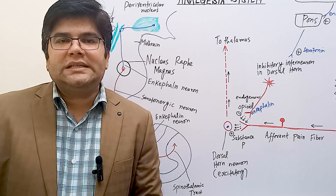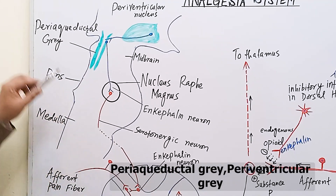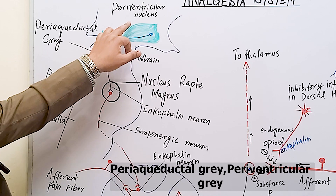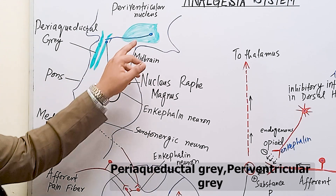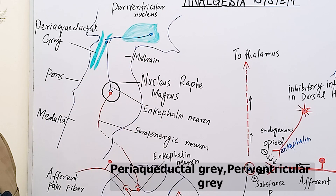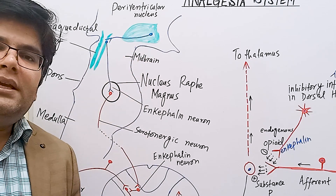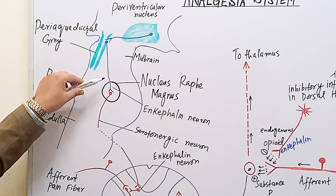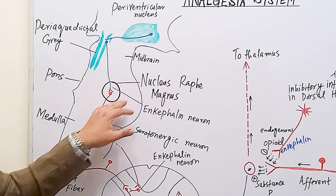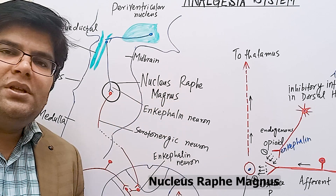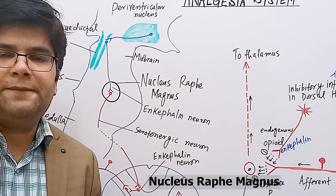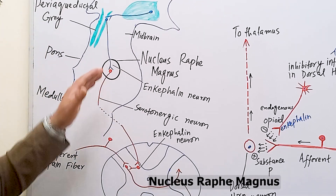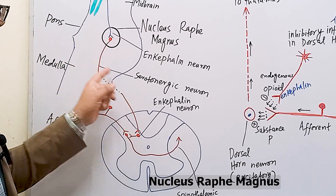There are three important components of the pain analgesia system. First is the periaqueductal gray matter, present around the aqueduct of Silvius, and also the periventricular gray matter, present in the third ventricle of the brain close to the hypothalamus. These two nuclei release the neurotransmitter enkephalin, which acts on neurons in the nucleus raphe magnus. The nucleus raphe magnus is a thin midline nucleus present in the lower pons and upper medulla. Second-order neurons start from here and descend downwards — these are serotonergic neurons.